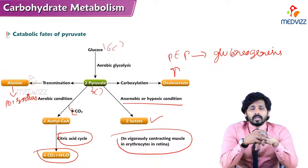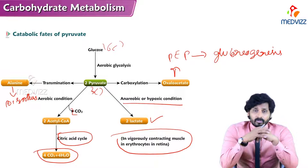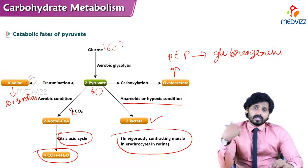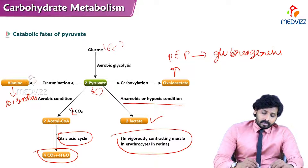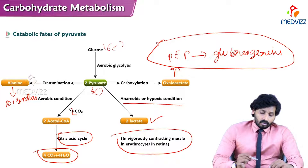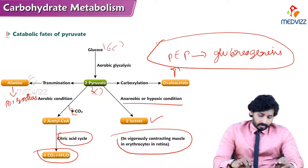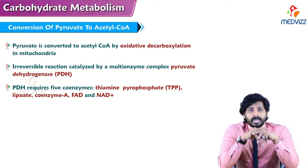In the presence of oxygen, pyruvate undergoes sequential oxidation to form CO2 and water via the citric acid cycle, producing reducing equivalents. In the absence of oxygen it is converted to lactate. In carboxylation, adding a carboxylic group converts it to oxaloacetate, which acts as a source for gluconeogenesis via conversion to phosphoenolpyruvate. We will discuss the role of oxaloacetate and phosphoenolpyruvate in glucose synthesis in detail.